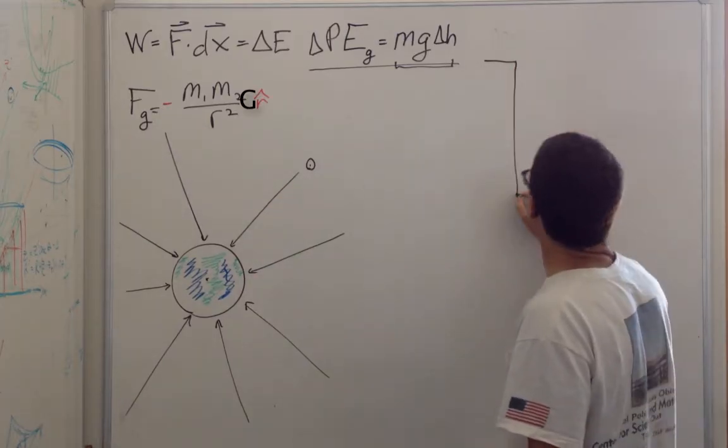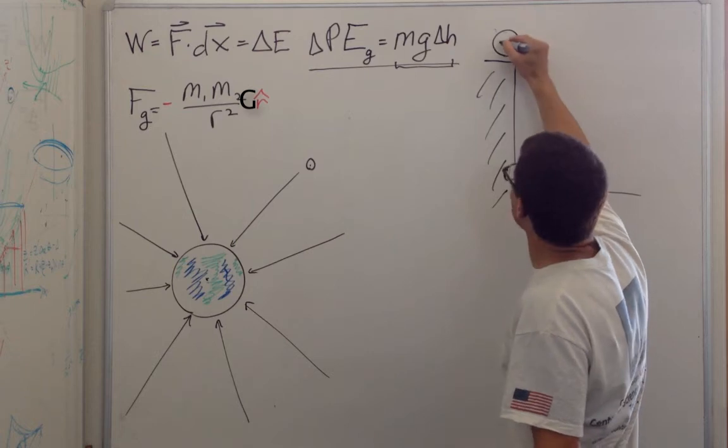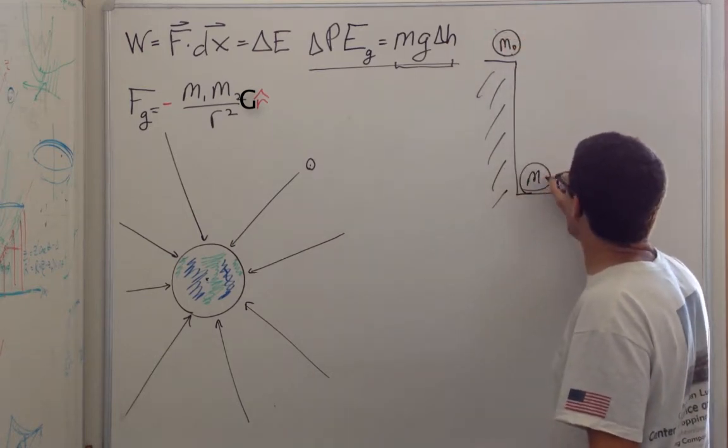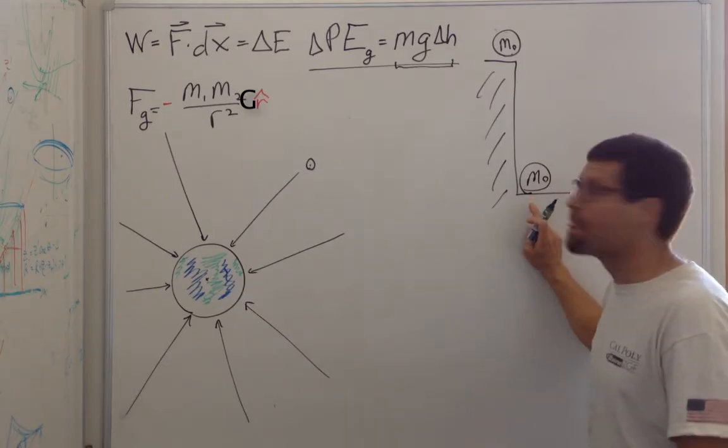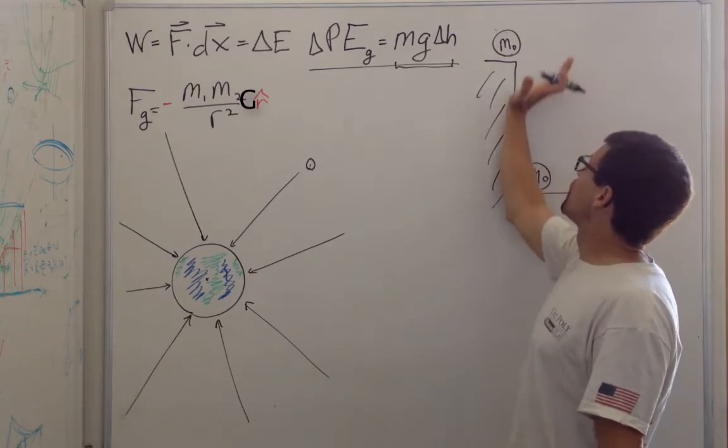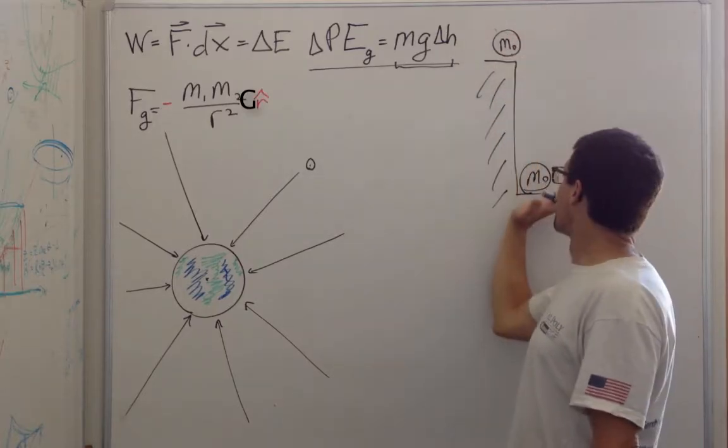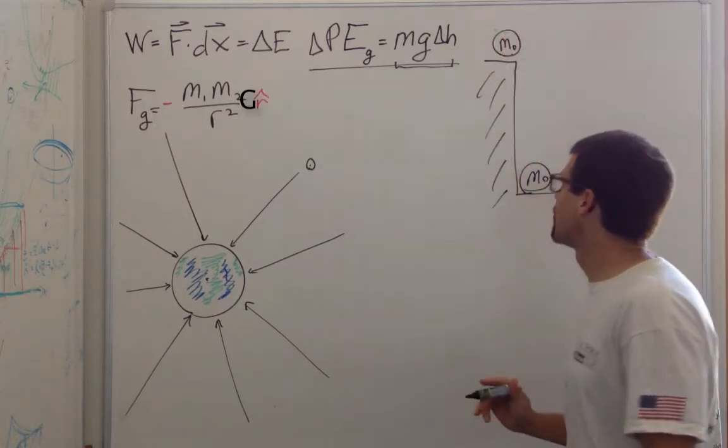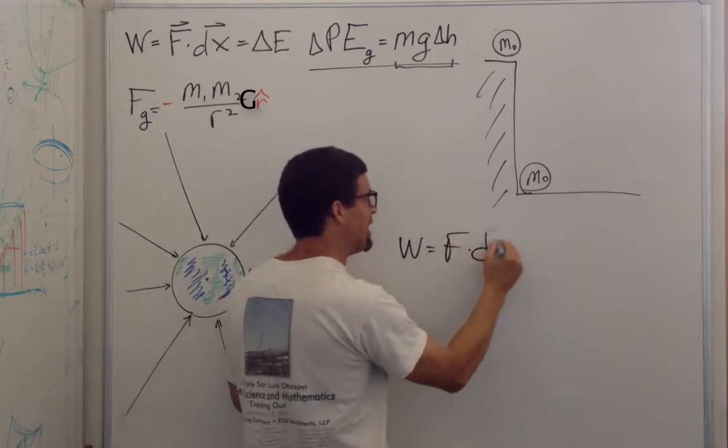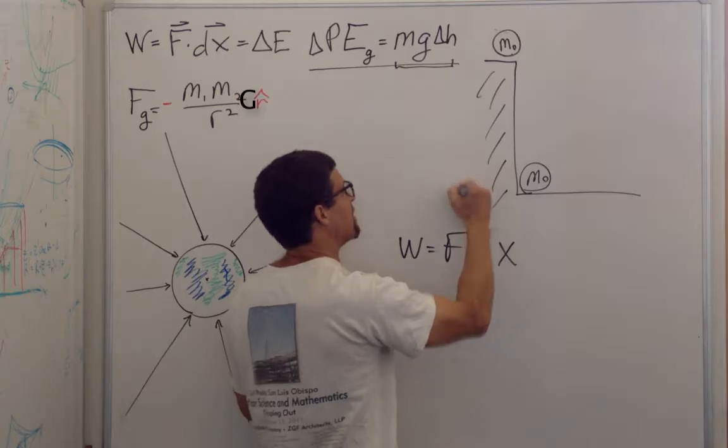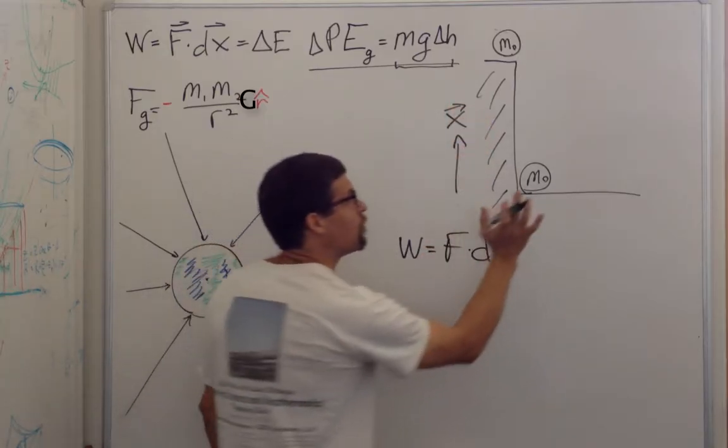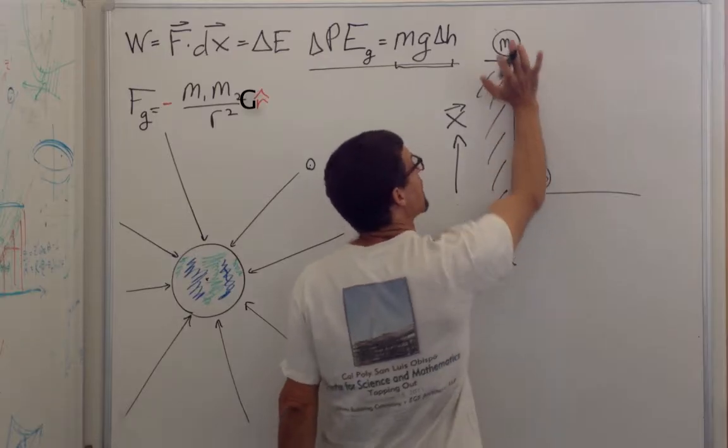Suppose I have a rock on a cliff of some mass m. I know it has more gravitational potential energy than this rock. That energy should be equal to the work I would need to move this rock from the lower position to the upper position. So I can find that expression, the work is equal to force dot dx, and in this case x is h.